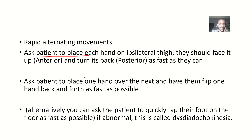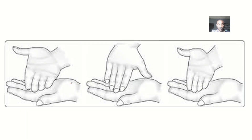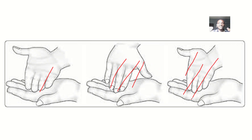The next type of rapid hand movement test: you ask the patient to place one hand over the other and have them flip one hand back and forth as fast as possible. So you place one hand over the next, then flip it back, flip it front, flip it back, flip it front, as fast as you can.